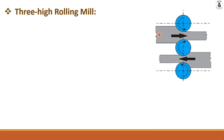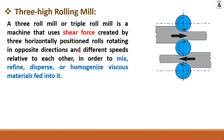Three-roll mills, also called triple roll mills, are machines that use shear force created by three horizontally positioned rolls rotating in opposite directions at different speeds relative to each other, in order to mix, refine, disperse, or homogenize viscous material. According to requirements, two-high or three-high rolling mills can be selected.